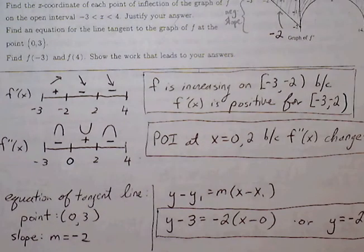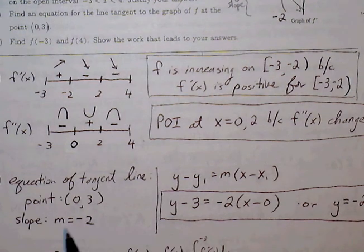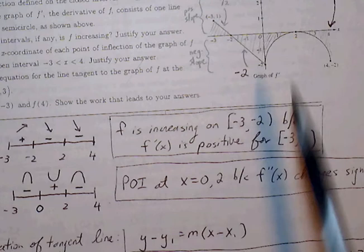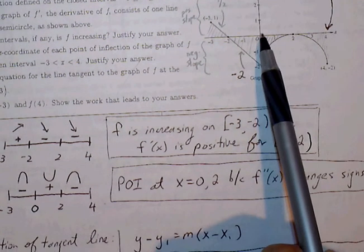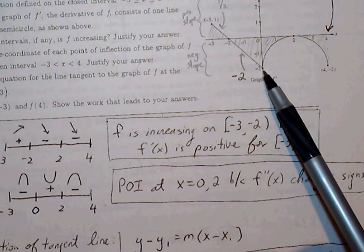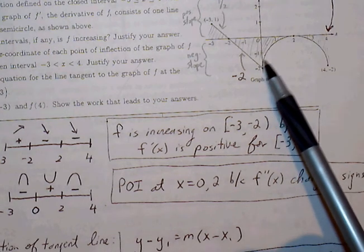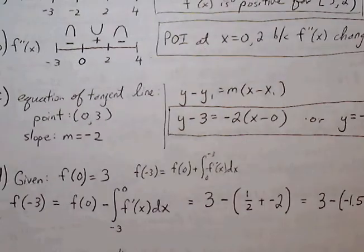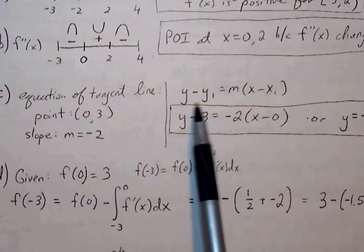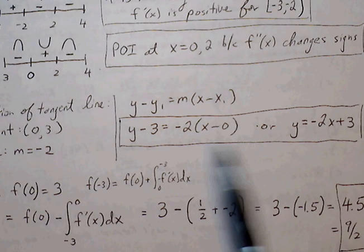For part C, find an equation for the line tangent to the graph of F at point zero three. We need the ordered pair, which is (0, 3), and the slope. Looking at the slope graph, the ordered pair at zero gives a y-value of negative two, so the slope is negative two. We have the ordered pair (0, 3) and slope negative two. Plugging into point-slope form: y minus 3 equals negative 2 times (x minus 0), or we can write it in slope-intercept form.